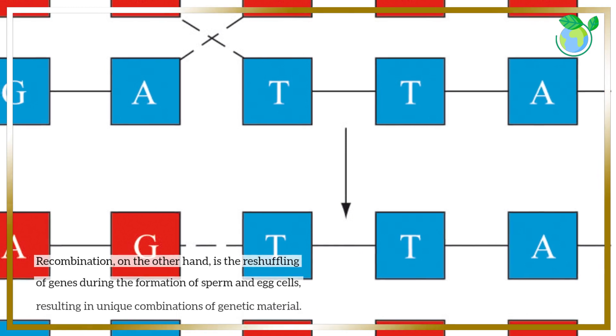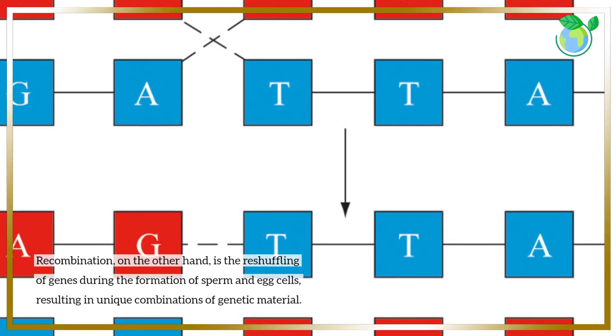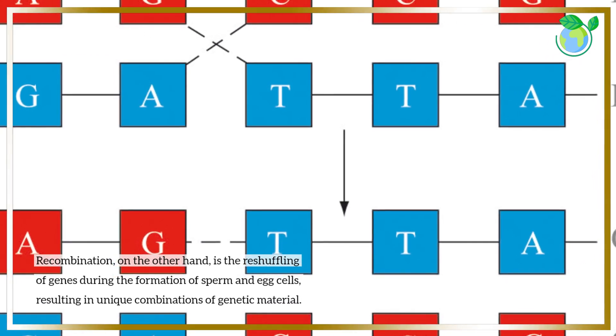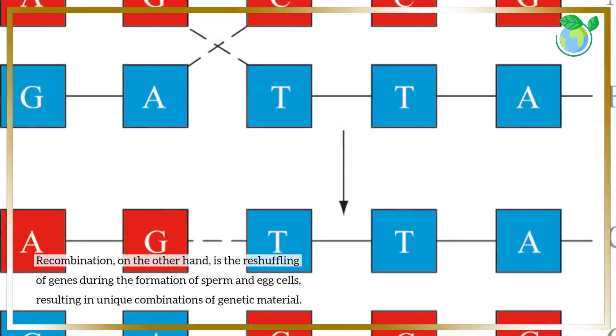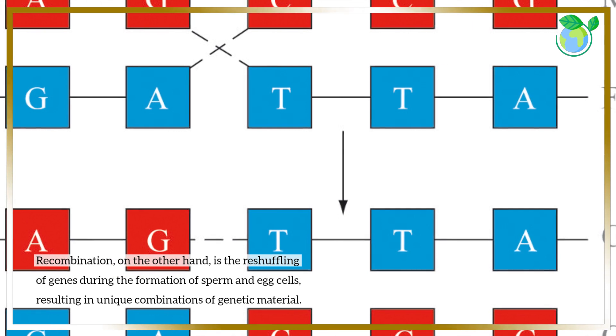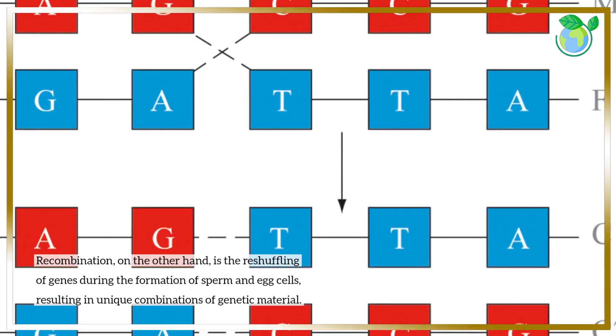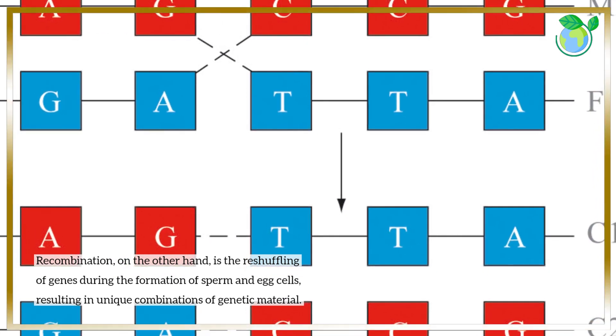Recombination, on the other hand, is the reshuffling of genes during the formation of sperm and egg cells, resulting in unique combinations of genetic material.